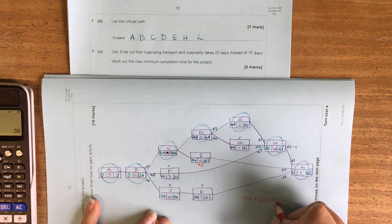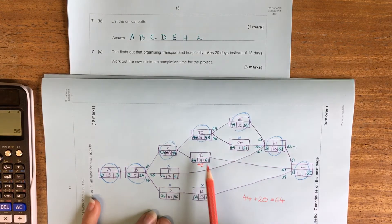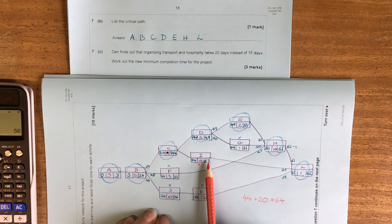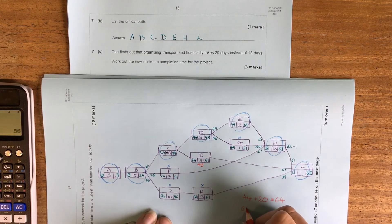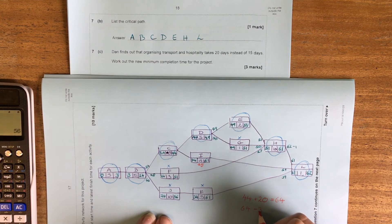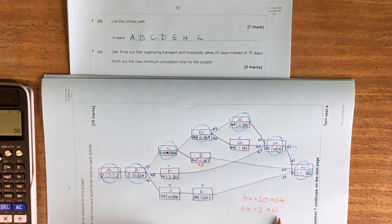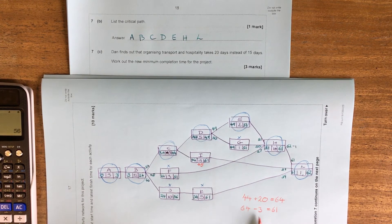Our latest deadline for that was 61. So 64 take 3 is 61. So we are going to increase our completion time by three days overall.